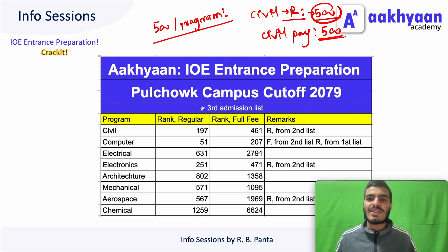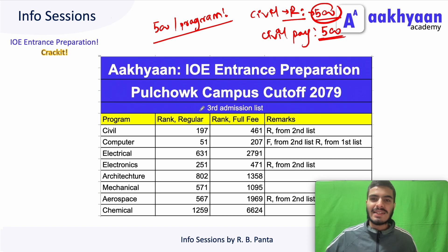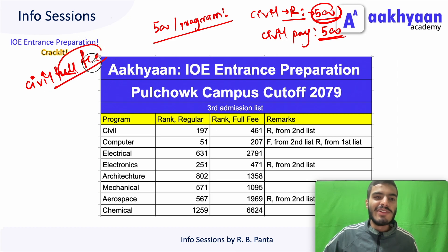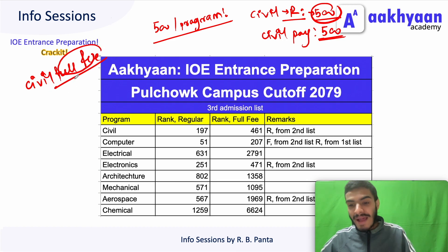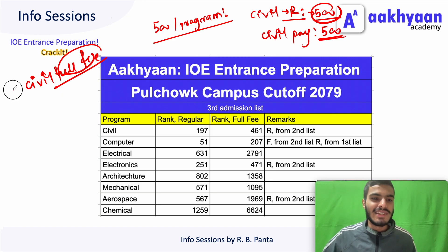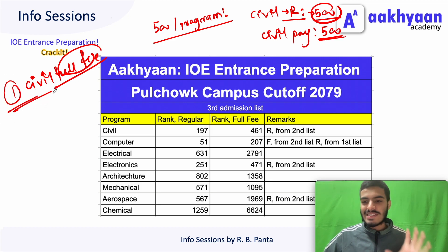If you want to use the first form, you can use it. You have to use the first form and the regular rank. So you have to use the priority form — these forms can be very important. You should know what the previous form will be used for.